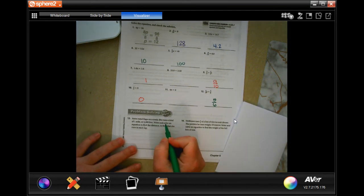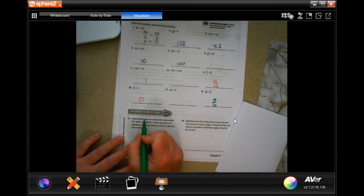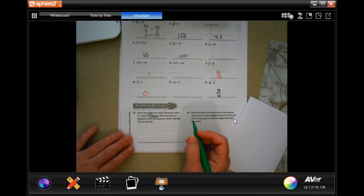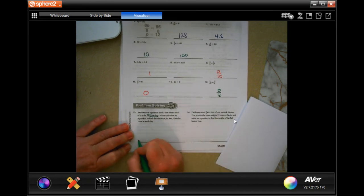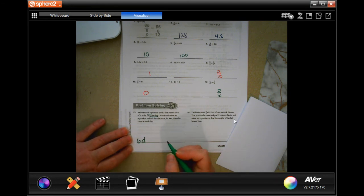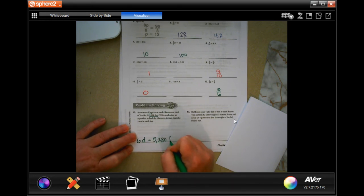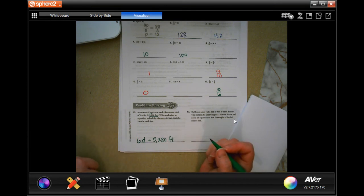Ann runs 6 laps on a track. She runs a total of 1 mile or 5,280 feet. Write and solve an equation to find the distance in feet that she runs in each lap. Well, she runs 6 laps. We're going to say 6, and we're going to say D for distance. 6D equals that 5,280 feet. Done.